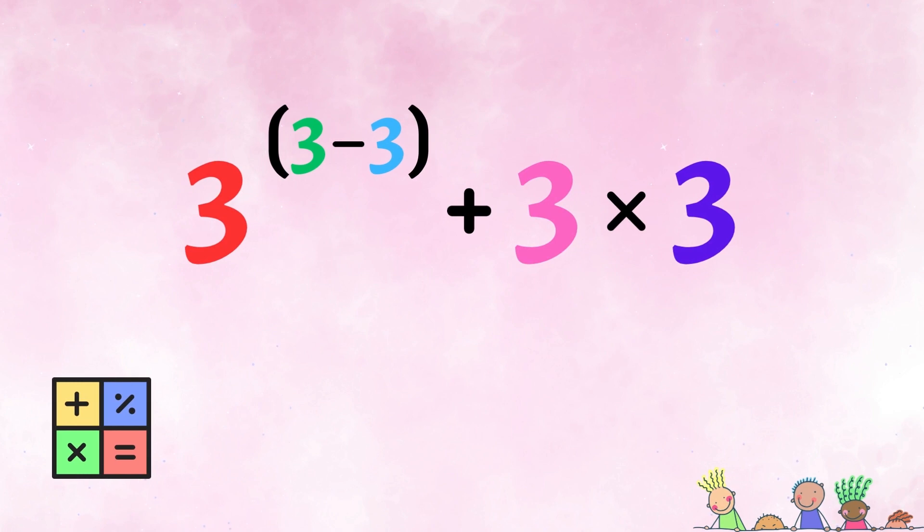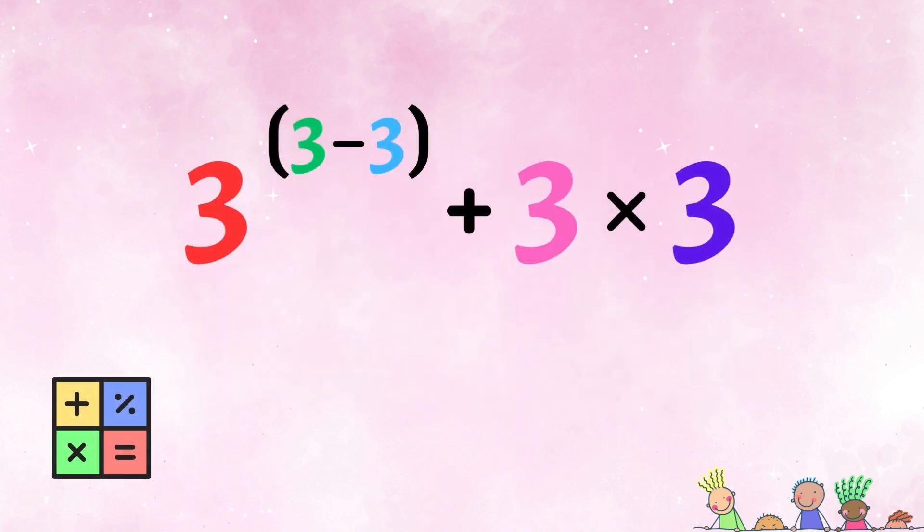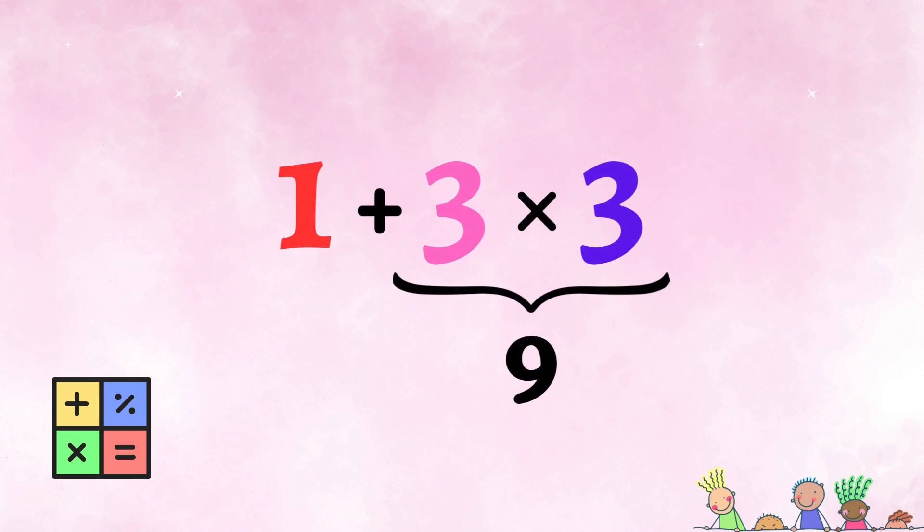Finally, the fifth variation. This one is genius level. 3 to the power of 3 minus 3 in brackets, then plus 3 times 3. In case you didn't know, any non-zero number to the power of 0 equals 1. So if we solve the numbers in brackets first, 3 minus 3 equals 0. And we know that 3 to the power of 0 is 1. We now have 1 plus 3 times 3. Multiplication first, so 3 times 3 is 9. And 1 plus 9 is 10! Incredible! Can you come up with more variations? If you can, share your genius in the comments!